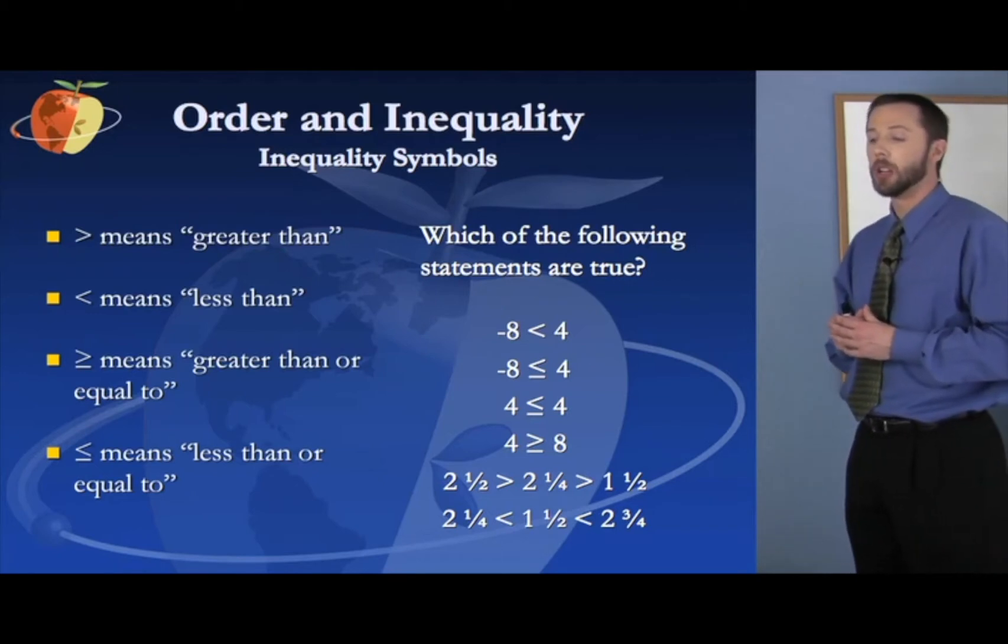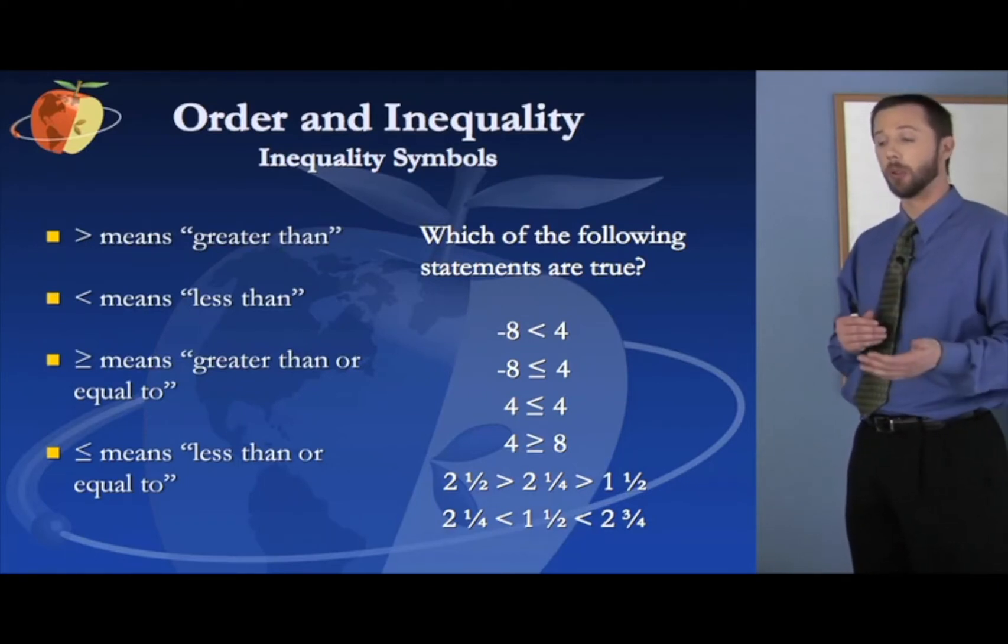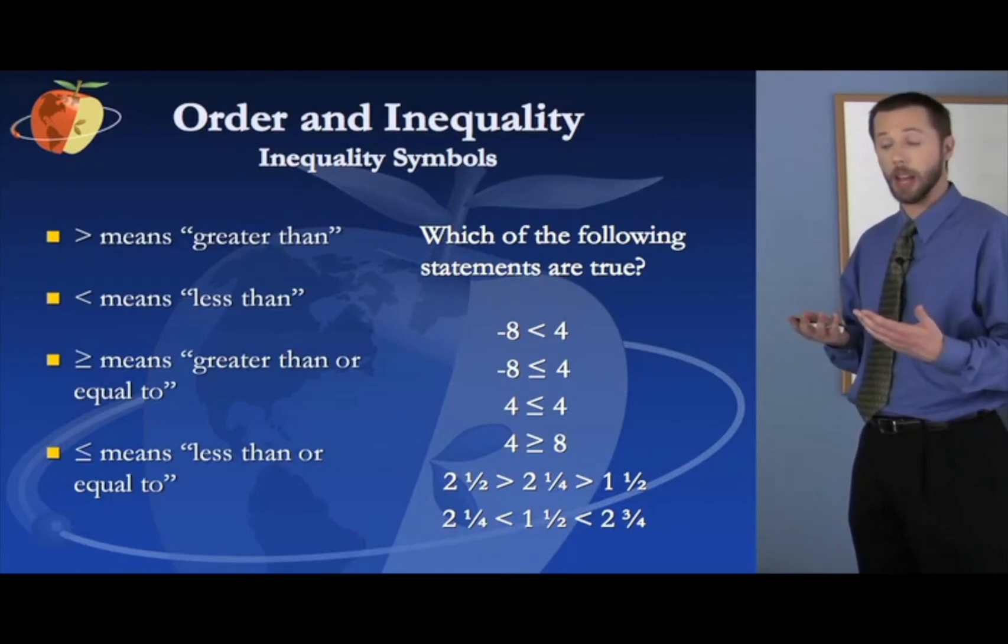What about the fifth statement here? Two and a half is greater than two and a quarter is greater than one and a half. That is true. A half is greater than a quarter. So two and a half is greater than two and a quarter. And two and a quarter, of course, is greater than one and a half.